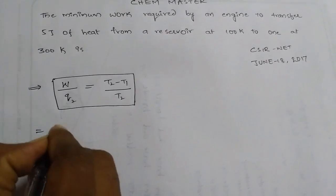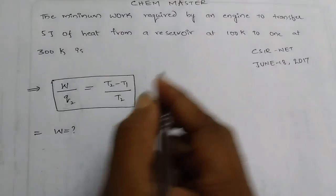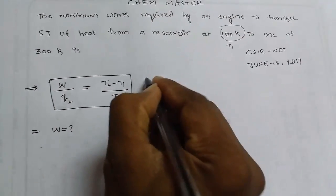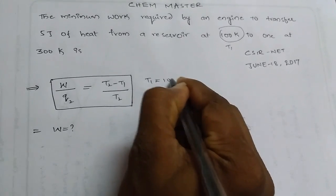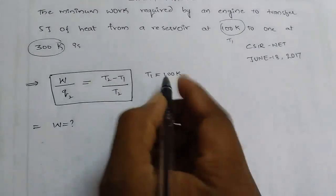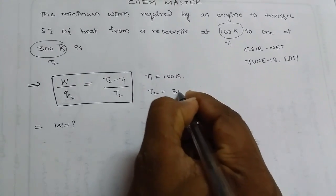We need to find W. From the problem, T1 is equal to 100 Kelvin, and T2 is equal to 300 Kelvin.